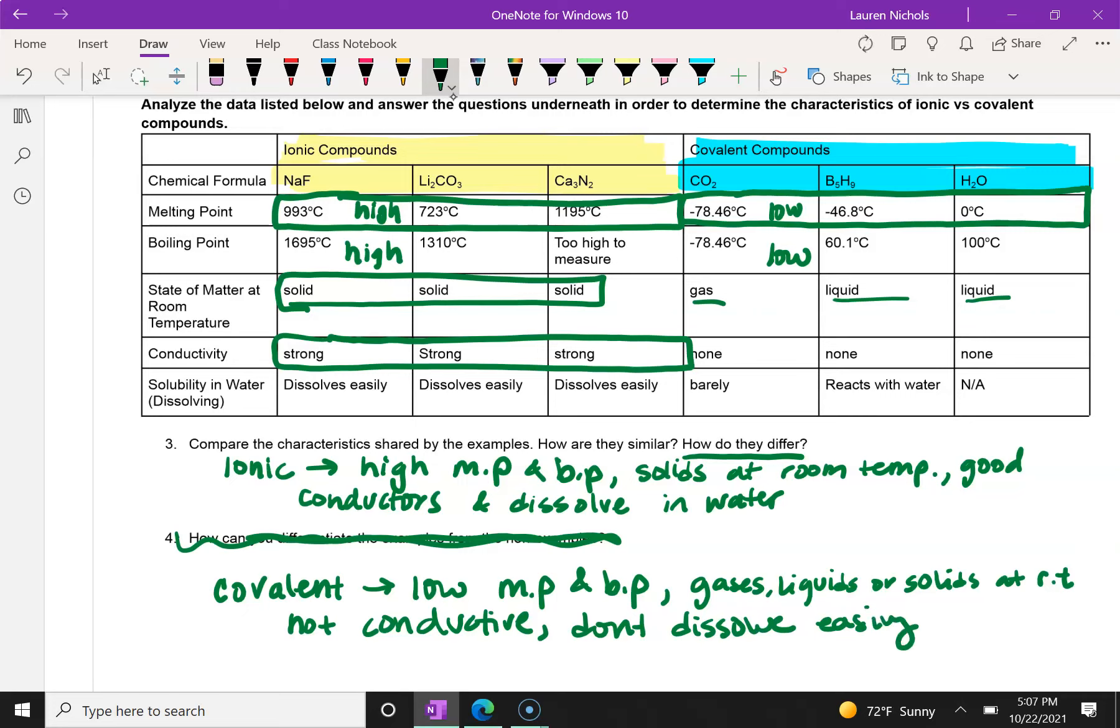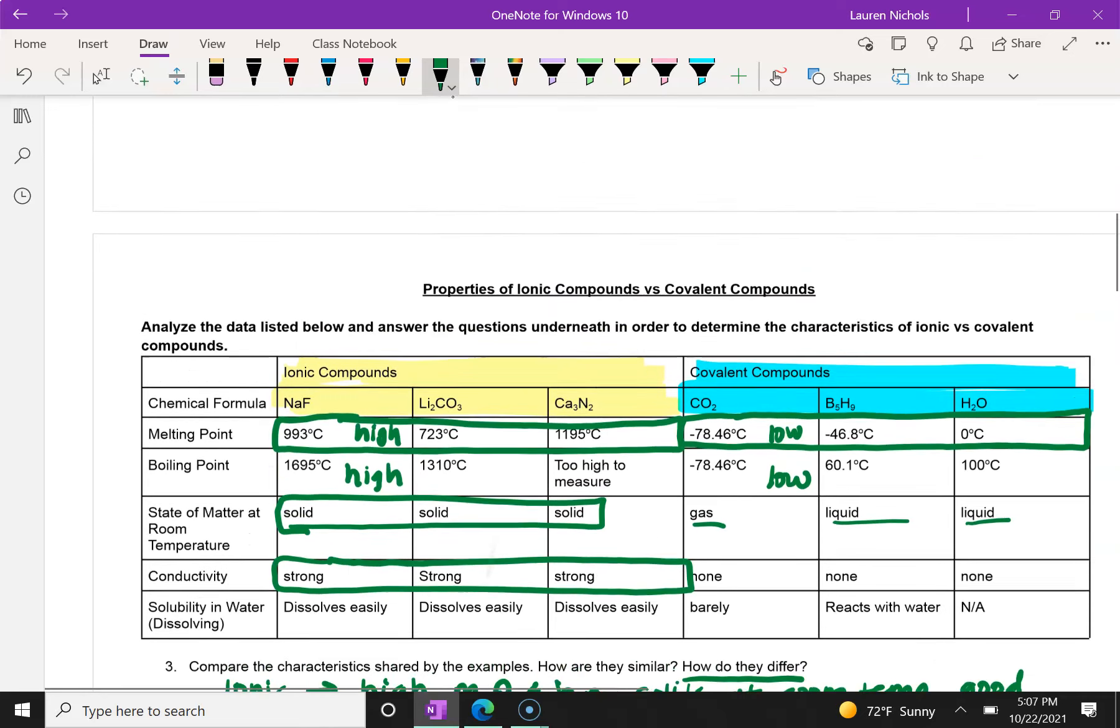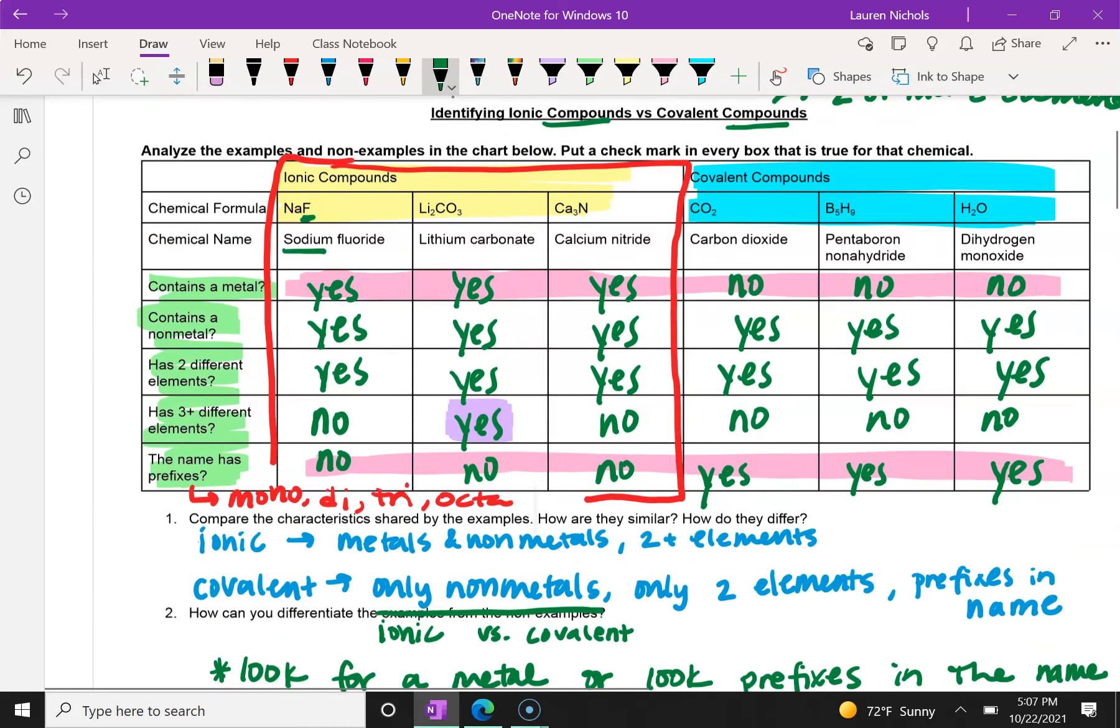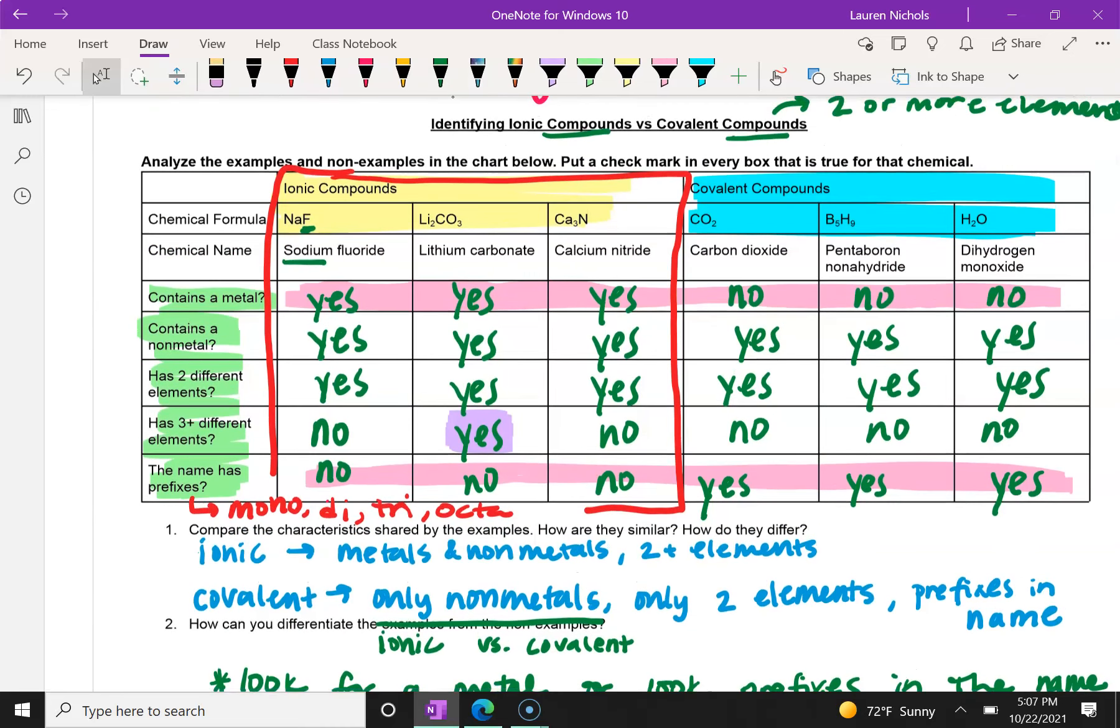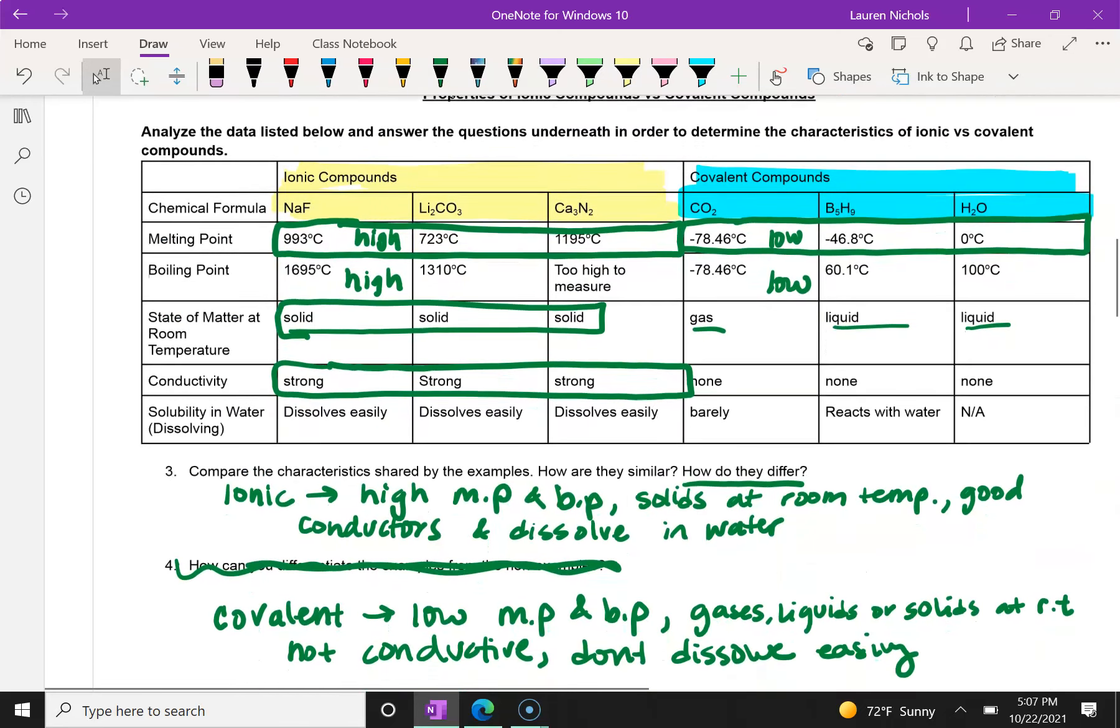So these are kind of our properties of ionic and covalent compounds. And so with this, you've got a general overview of how to identify an ionic versus a covalent compound and how to look at the data from a laboratory experiment to determine whether or not you have an ionic or covalent compound.